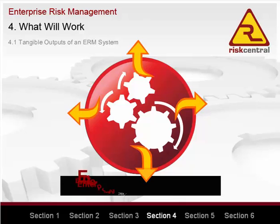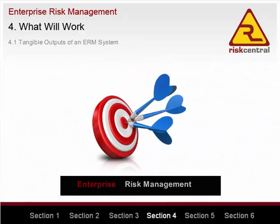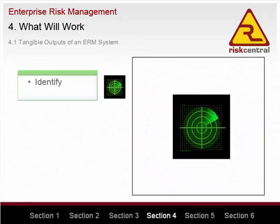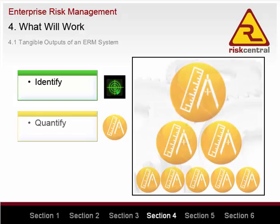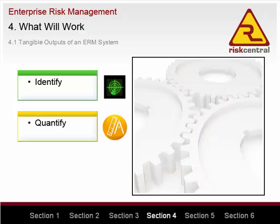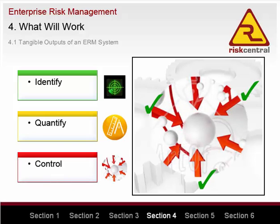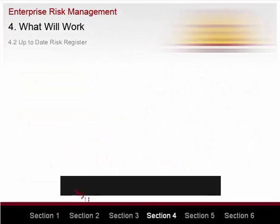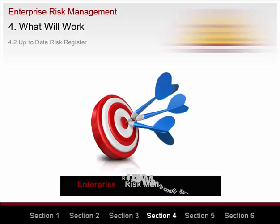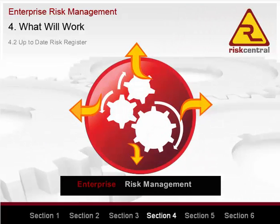The tangible outputs of an ERM system. The objective of a risk management system should be to ensure that all significant risks to business objectives are identified — including strategic, operational and financial risks — risks are prioritised based on size and resources are allocated to manage them appropriately, and the best controls are selected and implemented to cost-effectively reduce risks to acceptable levels. If a risk management system is to achieve these objectives, the system needs to produce some specific tangible outcomes.